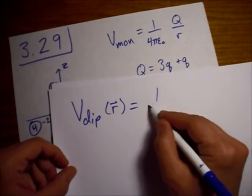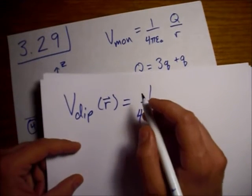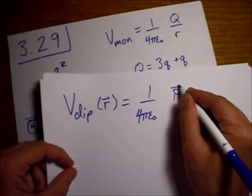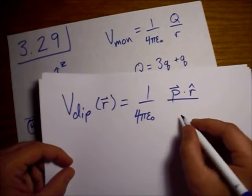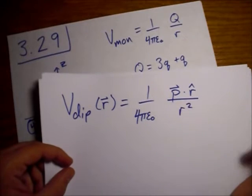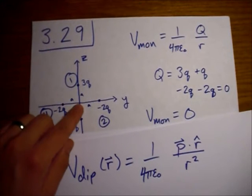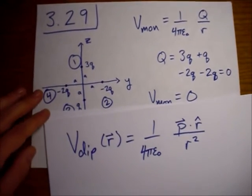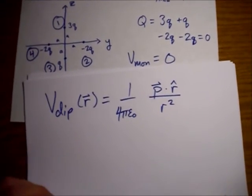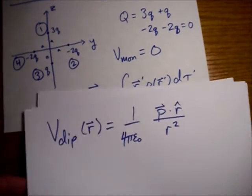Okay, we have, of course, our 1 over 4πε₀. And, we have our dipole moment dotted into our r hat vector. And, this is divided by r squared. Again, r is the distance from the origin out to our point.